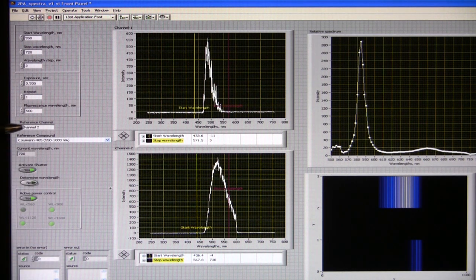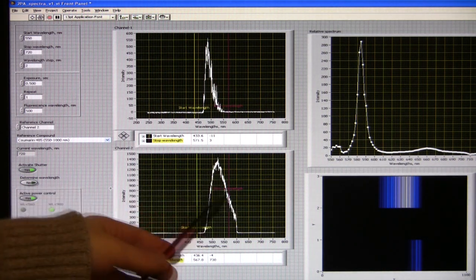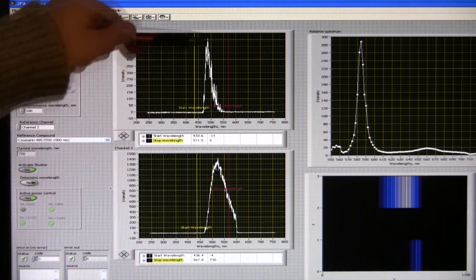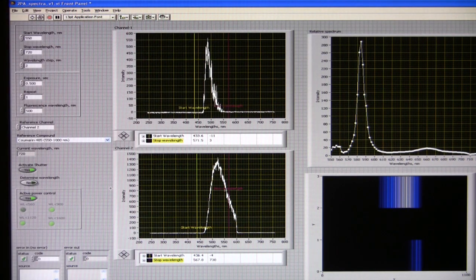Currently the channel 2 is used for reference samples. So this is the known compound, it's Coumarin 485, and this is another Coumarin dye, and both are dissolved in methanol.